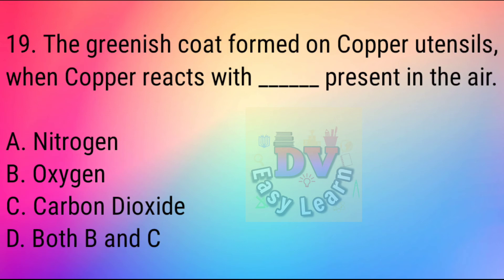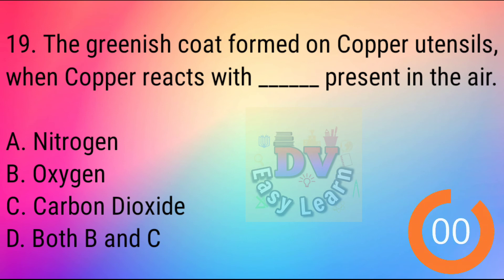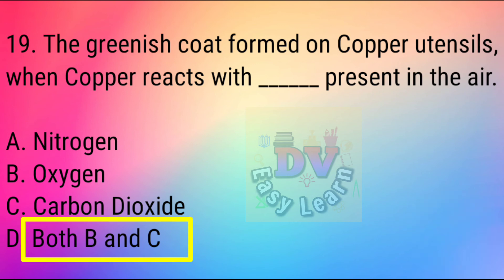Question No. 19: The greenish coat formed on copper utensils when copper reacts with dash present in the air. Correct answer: Both B and C — Oxygen and Carbon dioxide.